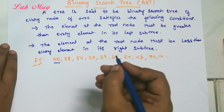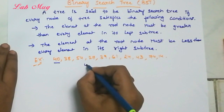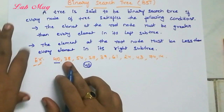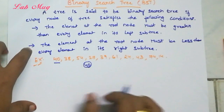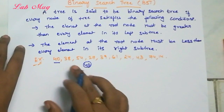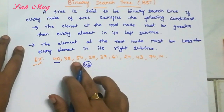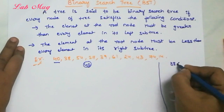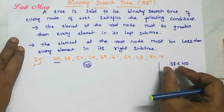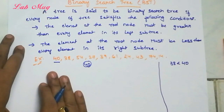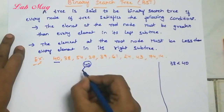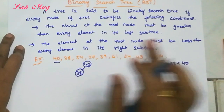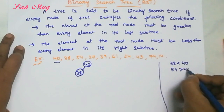How to construct: the first element is compulsory the root element, so that is 40. Next, the second element — how to allot 38 in this tree? 38 is less than 40, so since 38 is less than 40, we place it on the left side. So 38 is the left element of 40.